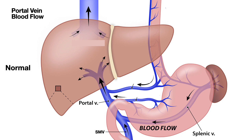The portal vein, like any vein, once it enters the liver, branches and becomes capillaries to supply the liver cells. Then hepatic veins start draining the liver and enter the inferior vena cava, which goes into the right atrium.